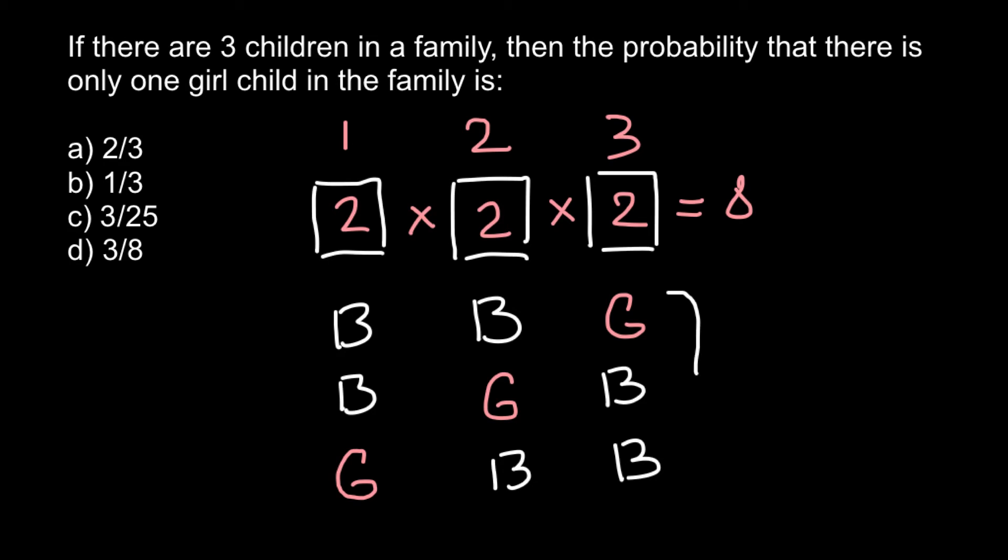So as you see, we have three combinations when in a family with three children we would have one girl out of three children. So total number of different combinations is 8, and 3 out of 8 would be combinations where we would have one girl in a family with three children. So as you see, the correct answer is answer D.